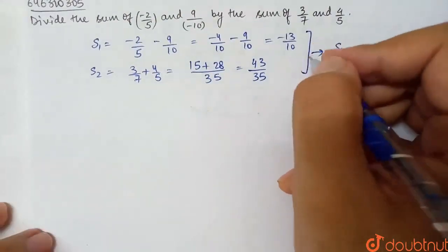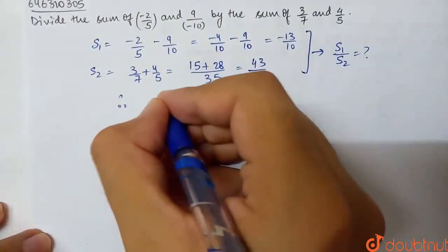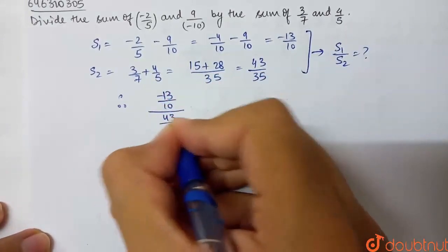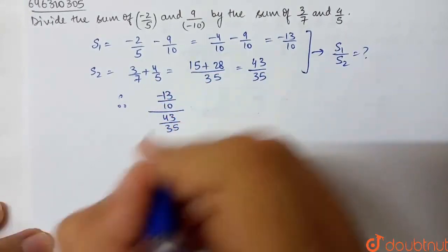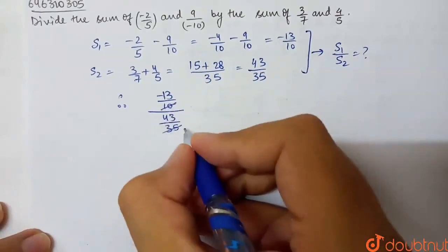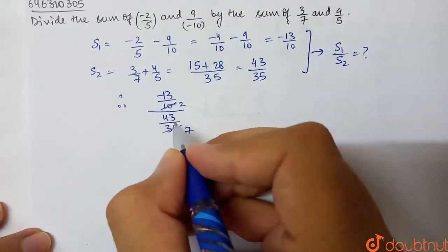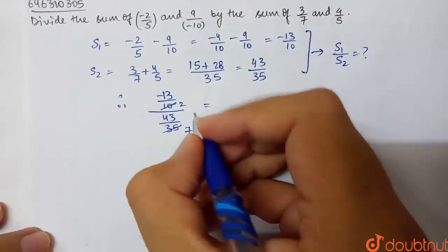So S1 is minus 13 by 10. Therefore, minus 13 by 10 whole divided by 43 by 35. Now 10 and 35, this will cancel. This will be 7, and this will be 2.